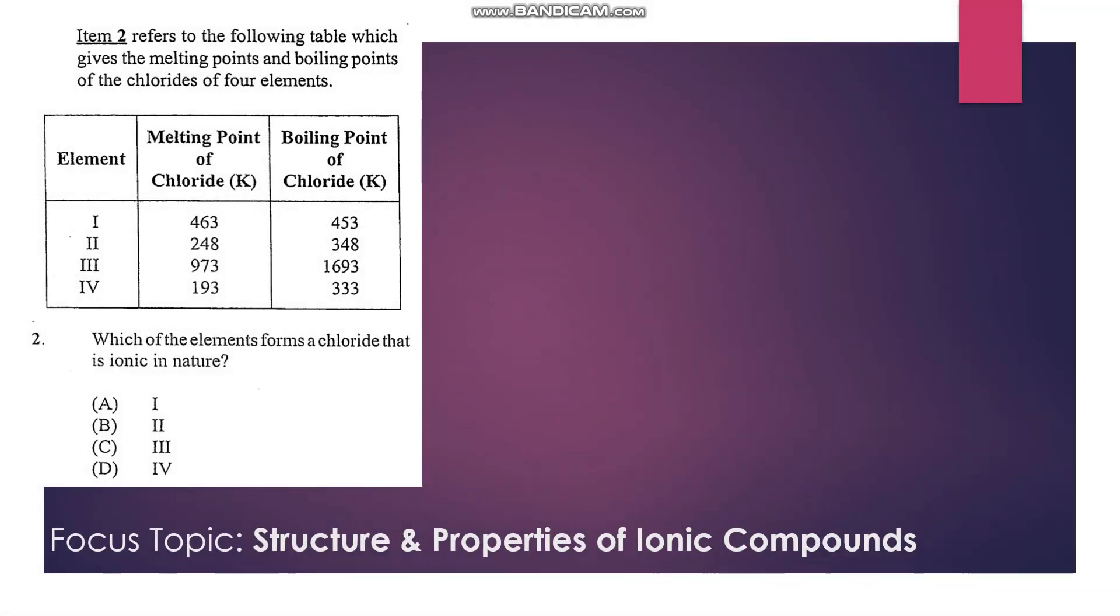Number 2 refers to the following table which gives the melting and boiling points of the chlorides of four elements. The question asks which of the elements forms a chloride that is ionic in nature. Based on what we know, ionic salts have high melting and boiling points, so the answer would be 3, which is C.